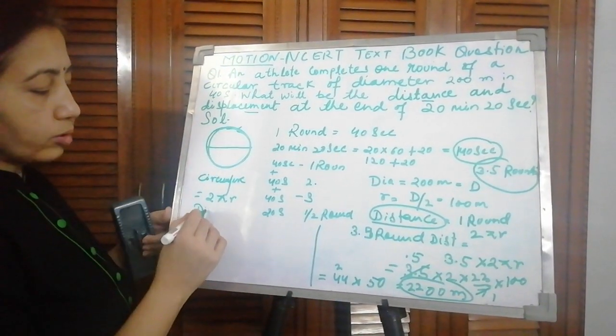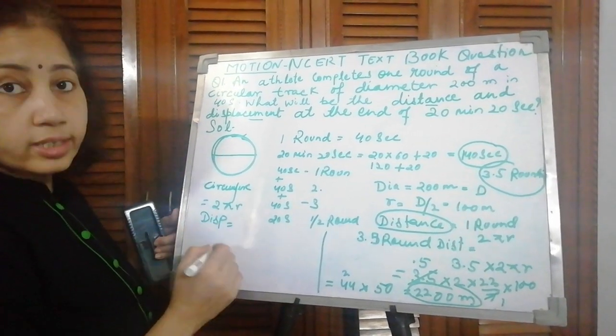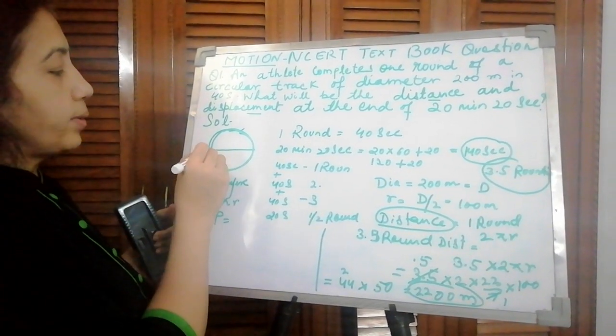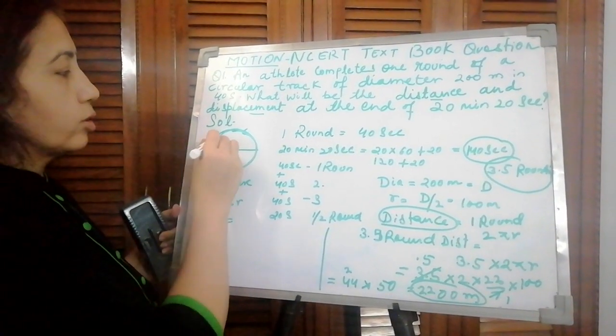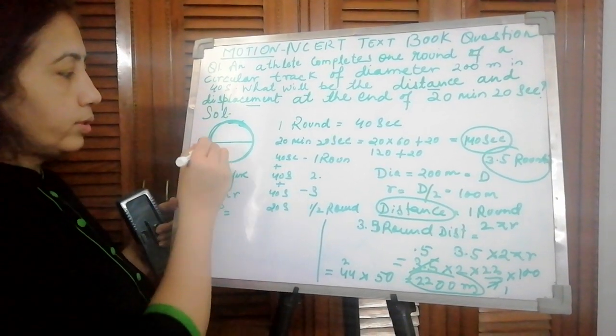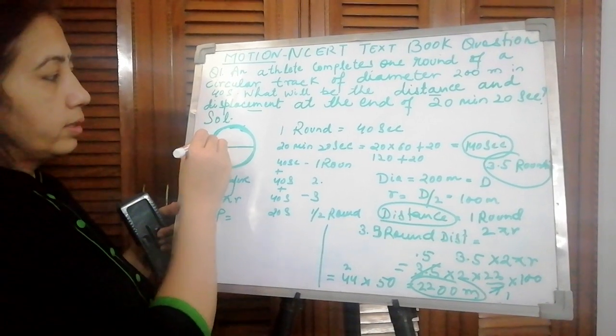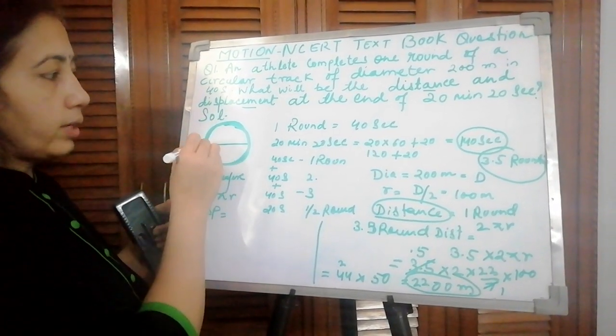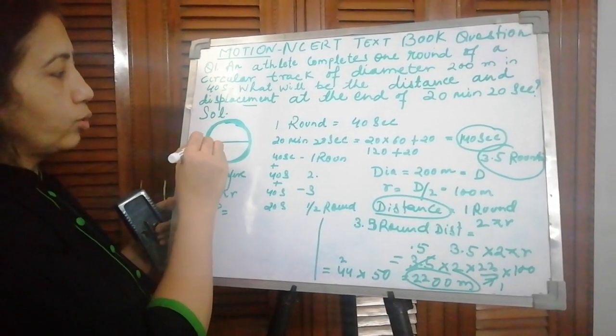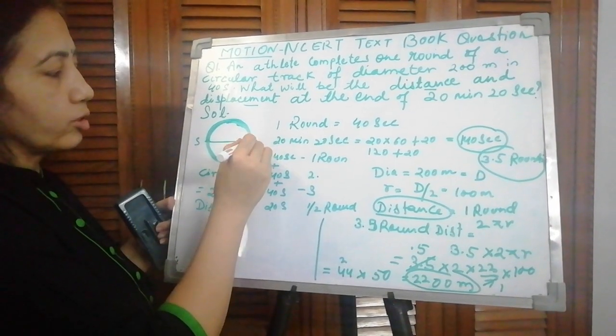Now what is displacement? Shortest distance. For example, if this is the starting point, how many rounds did he take? One round, then two rounds, then three rounds, and a half more. Half more means he will reach here, that is his final point.